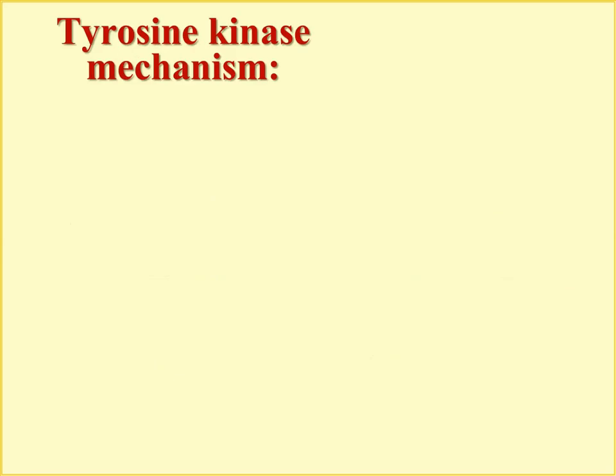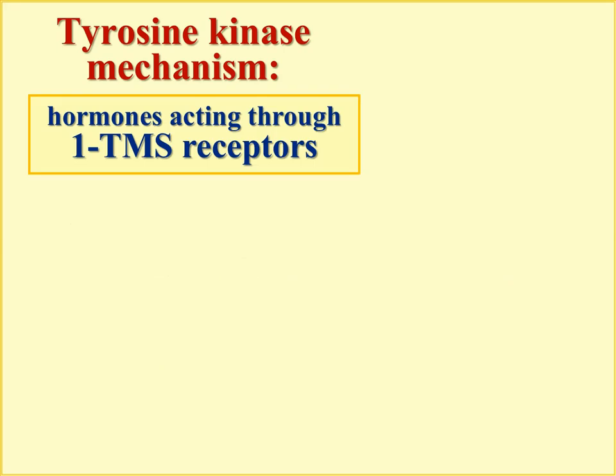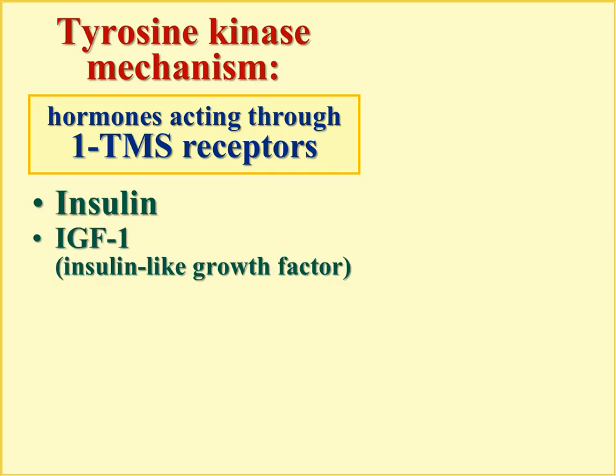Another group of hormones uses the tyrosine kinase mechanism. This is not a large group — the best examples are insulin and insulin-like growth factors, which are not true hormones but operate through this pathway. Many growth factors — hematopoietic growth factors, nerve growth factors, and so on — are not hormones but also use the tyrosine kinase mechanism. Prolactin and growth hormone use a similar tyrosine kinase mechanism as well.